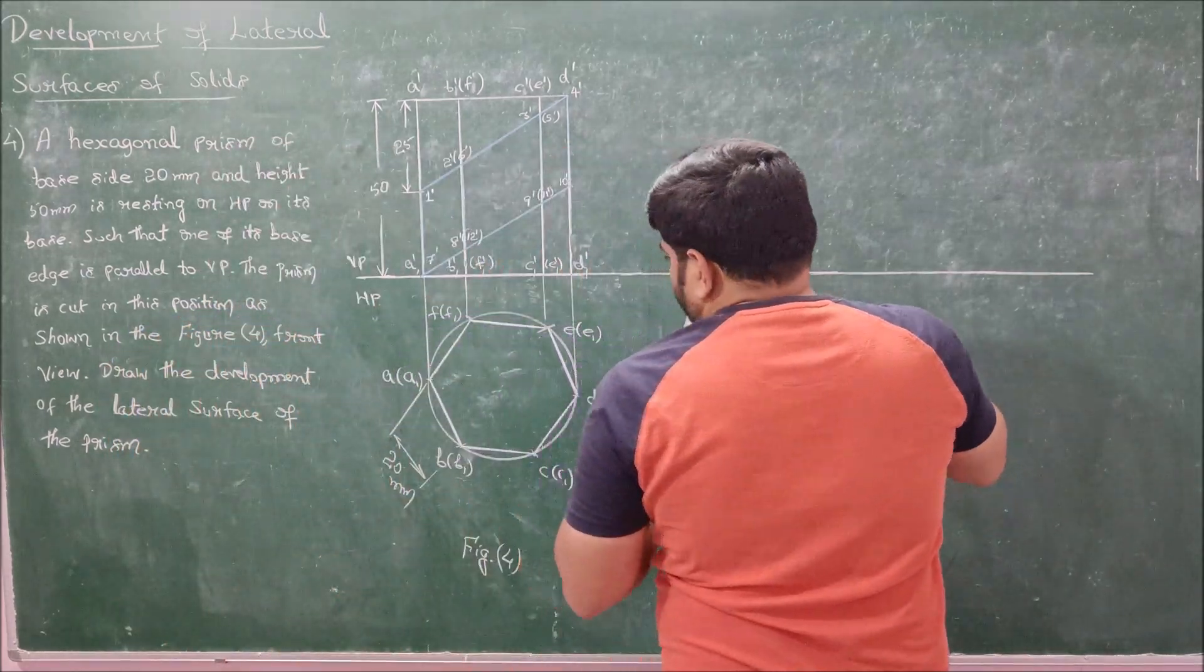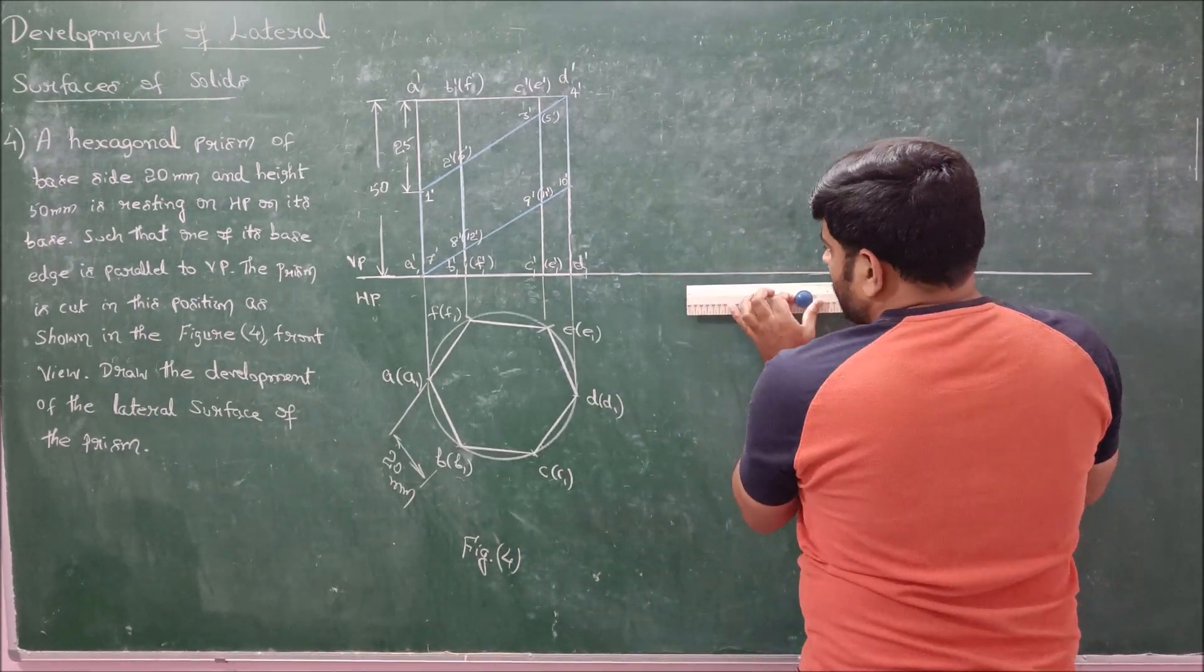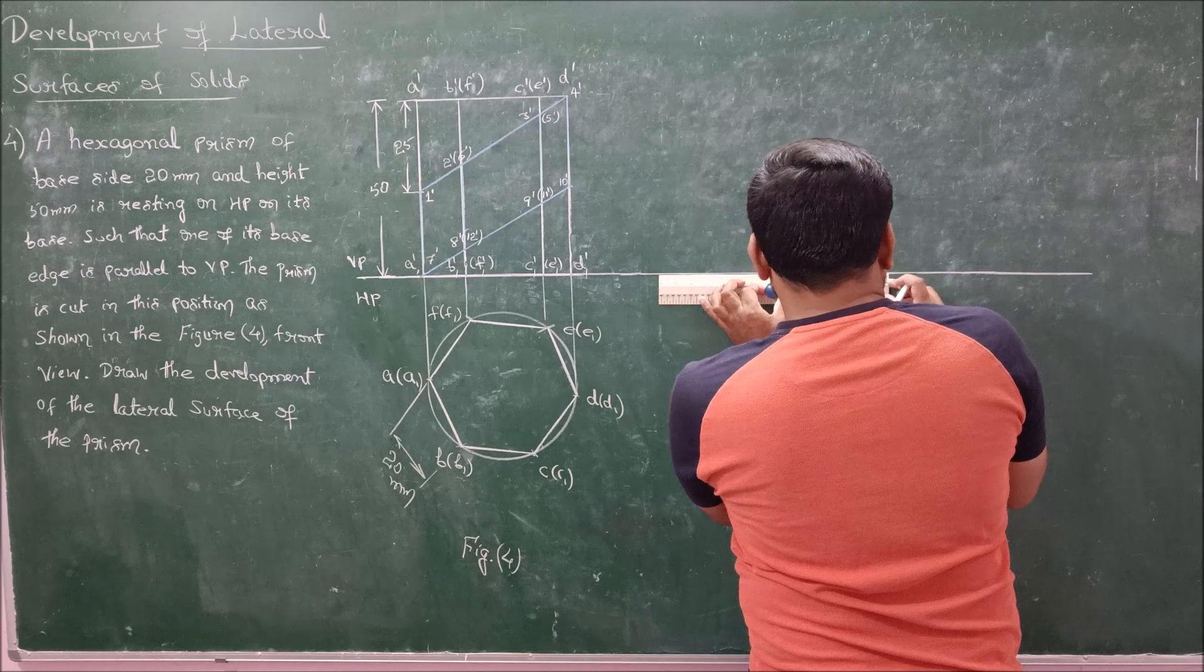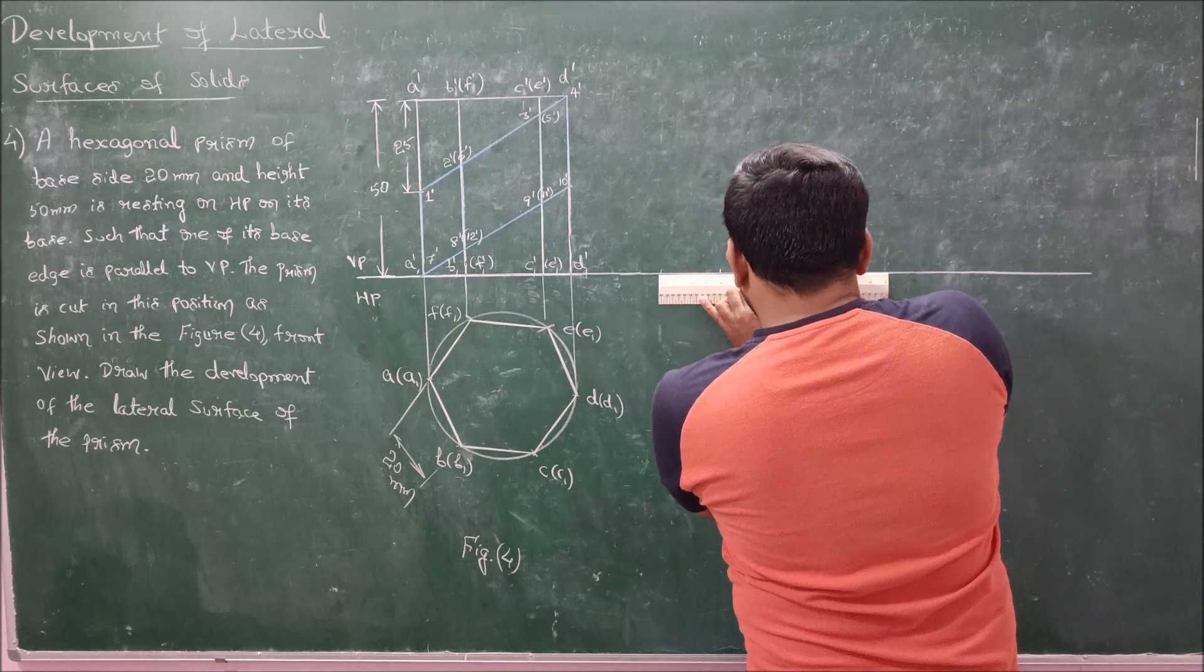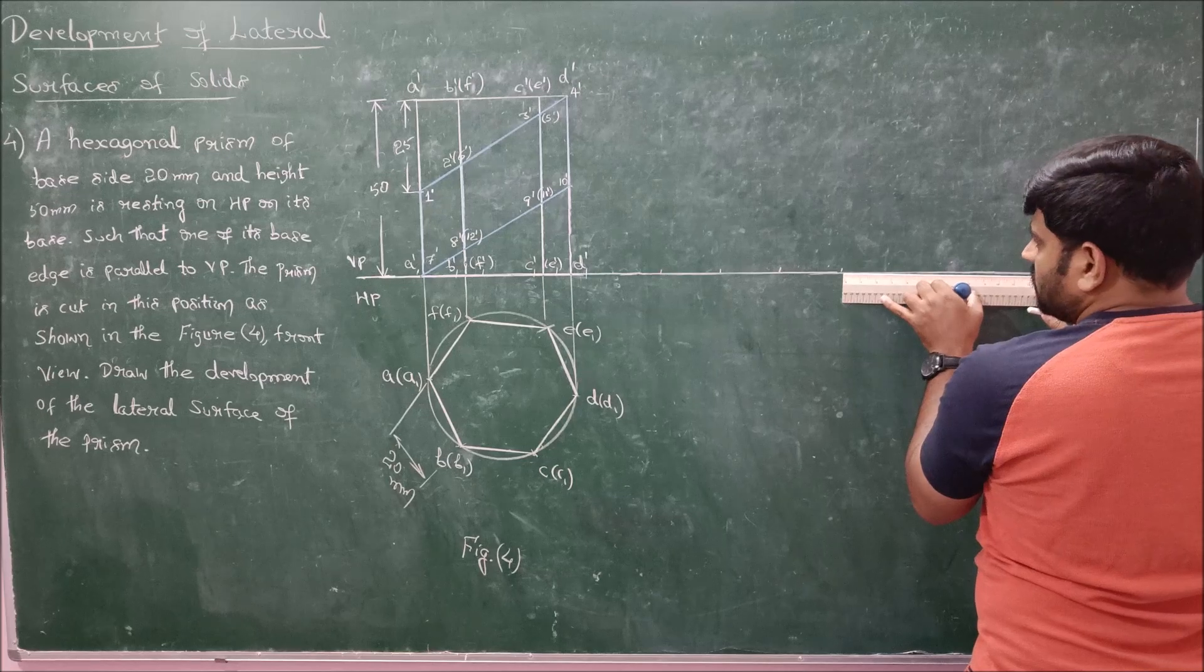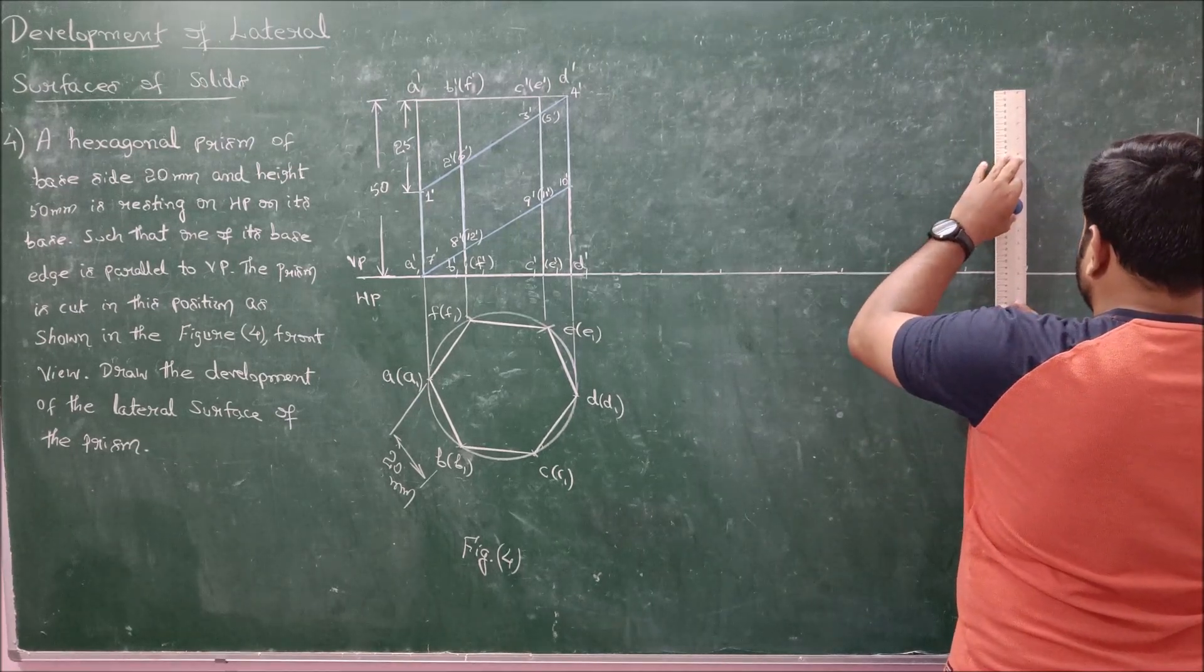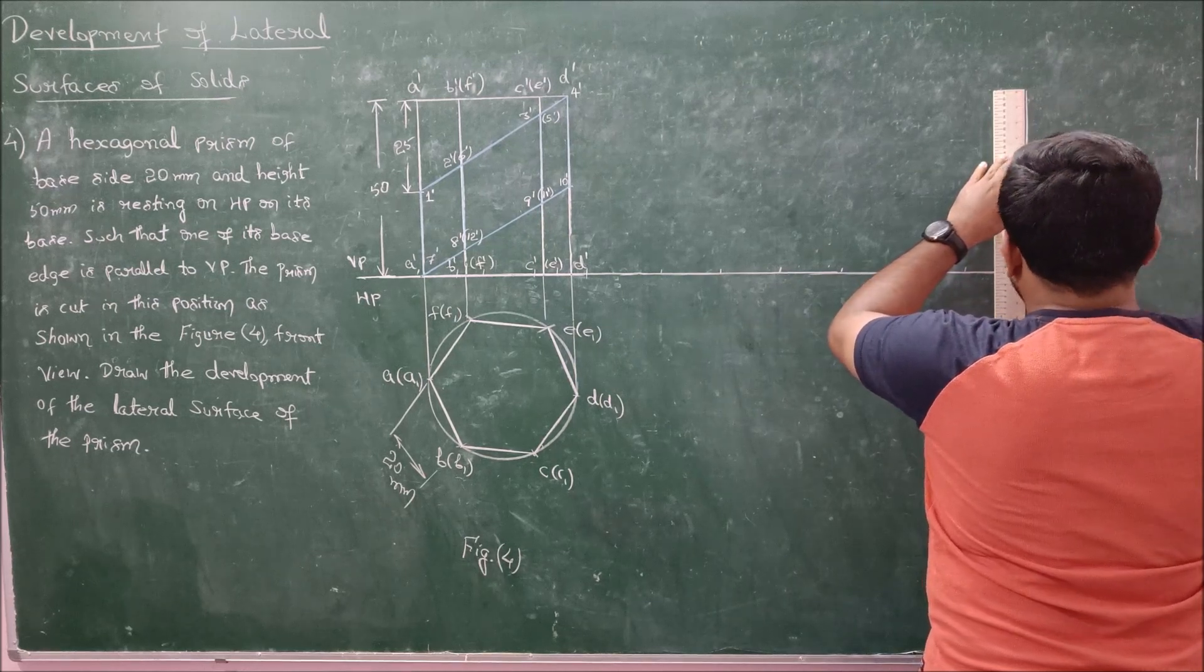Now unfolding which the horizontal distance will be 20 times 6 faces. So it will be 120 mm. First, that is, we have 20 times 6 faces, 1, 2, 3, 4, 5 and 6. Height is known. Height is 50 mm.